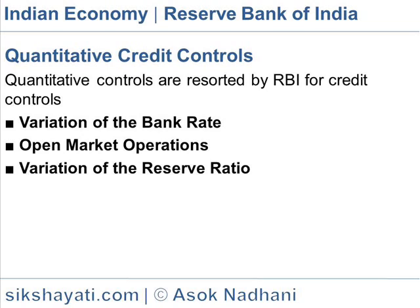Open Market Operations. When the central bank sells securities in the open market, money flows close to it. The reserves of other banks reduce, forcing them to reduce their loans. Conversely, when the central bank buys securities, money flows out of it. The reserves of other banks increase and credit tends to expand.